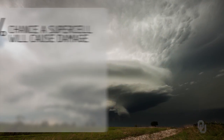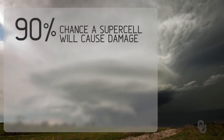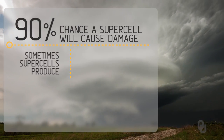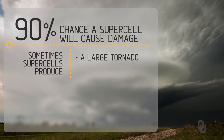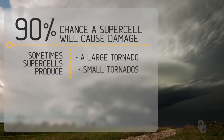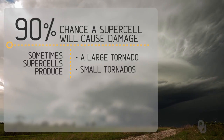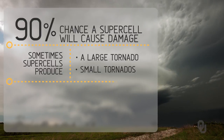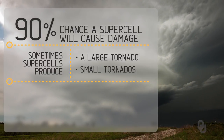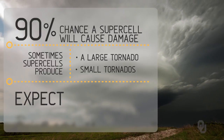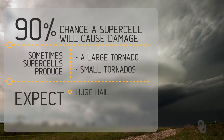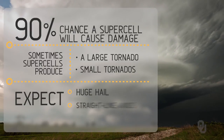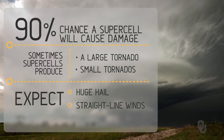Supercells produce damage approximately 90% of the time. Sometimes they will produce a large tornado and/or smaller tornadoes, but more often than not they will create damage with very large to huge hail and strong damaging straight-line winds.